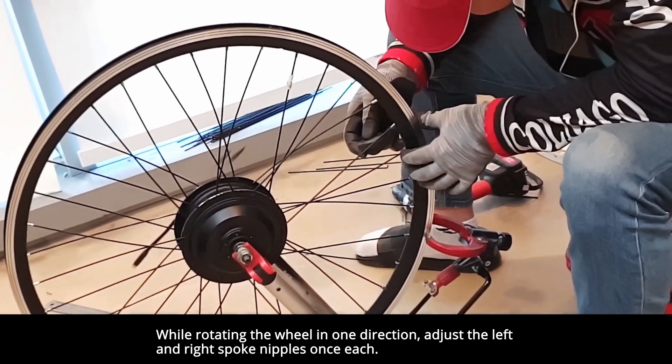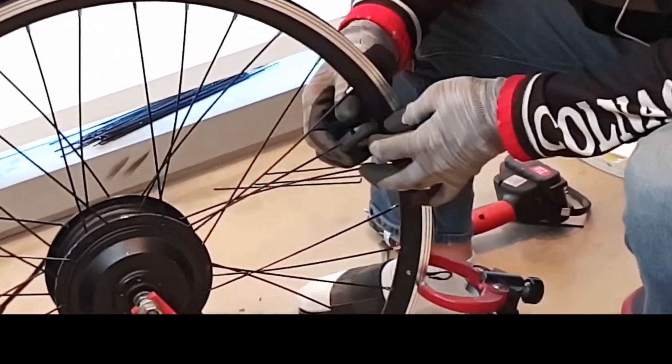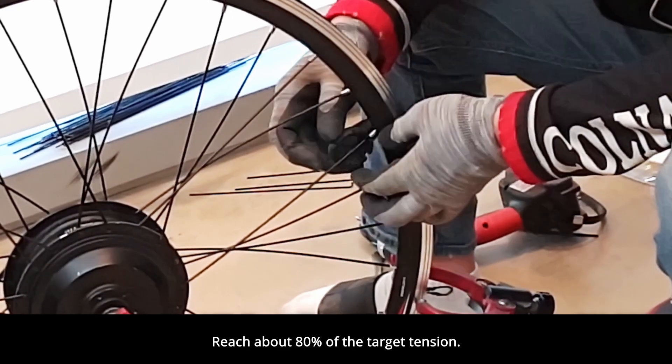While rotating the wheel in one direction, adjust the left and right spoke nipples once each. Reach about 80% of the target tension.